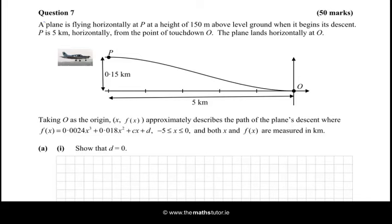Hi there. In this question, we are told that a plane is flying horizontally at P at a height of 150 meters above level ground when it begins its descent. P is 5 kilometers horizontally from the point of touchdown O. The plane lands horizontally at O. We can see all this from the graph as well.